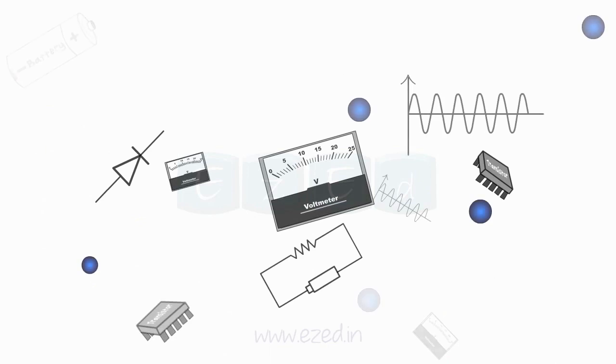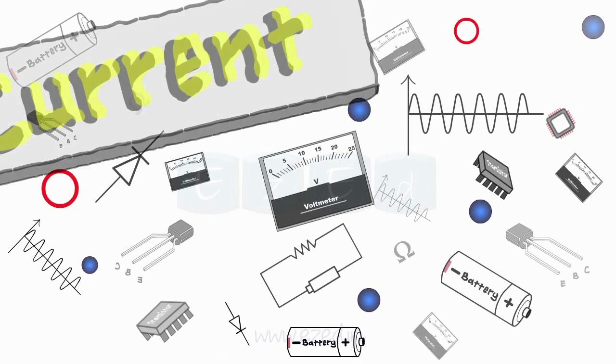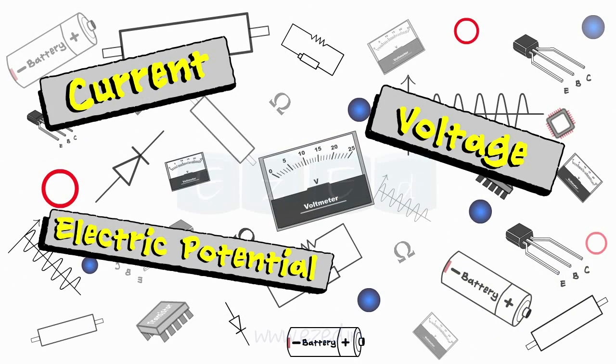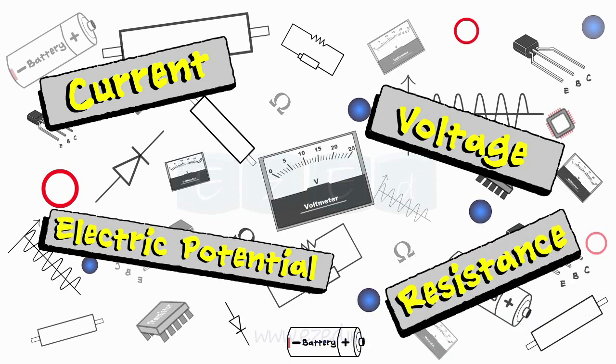In electronics, we come across many terms such as current, voltage, electric potential, resistance, etc. Let's see what their significance is.